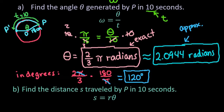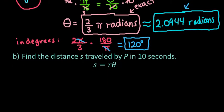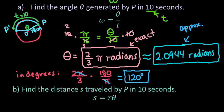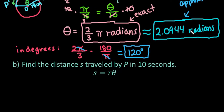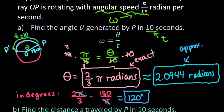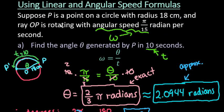So the next thing that it wants us to find is it wants us to find the distance that was actually traveled. So how far did this actually go on the circle? What was the distance that was covered? So with this one, what we're going to do is we're going to use S equals R times theta. So if we remember, and we go back up to the original problem, our radius is 18 centimeters. So that's going to be our R value.